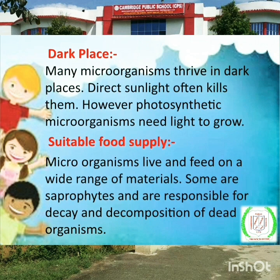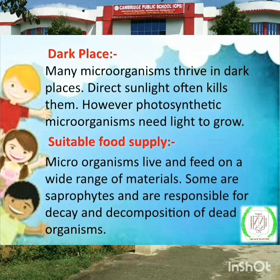Dark place — many microorganisms thrive in dark places. Direct sunlight often kills them. Sunlight ke presence mein microorganism jo hote hain woh mar jaate hain, is liye dark place pe in ka growth zyada hota hai. Suitable food supply — microorganisms live and feed on a wide range of materials. Kuch sukshmjeev apne food ke liye doosre jeevon par ya marey-sade gale cheezion par zyada grow karte hain. Some are saprophytes and are responsible for decay and decomposition of dead organisms.